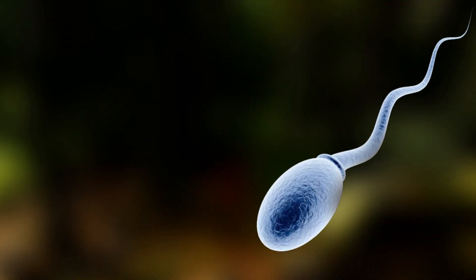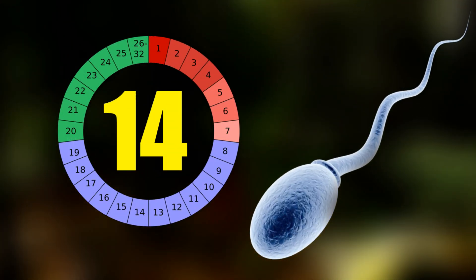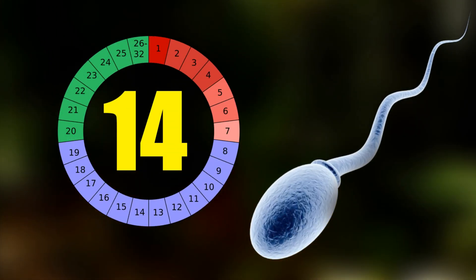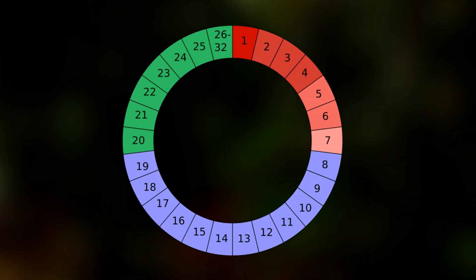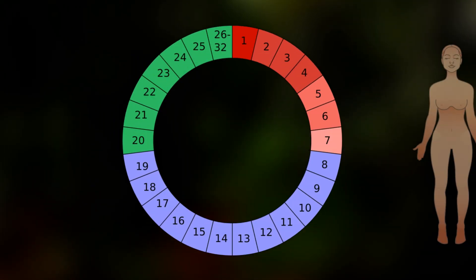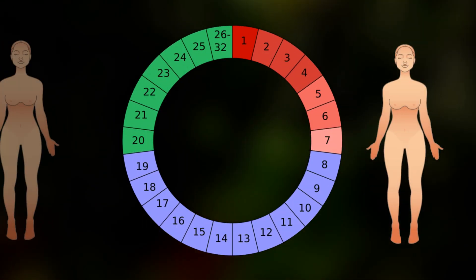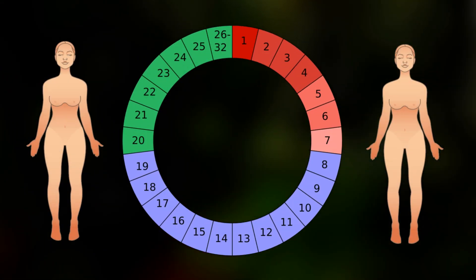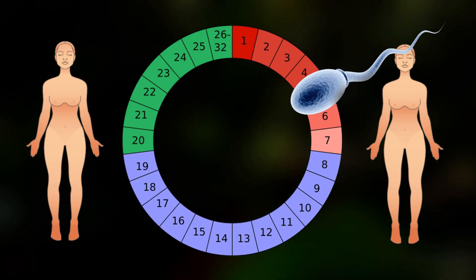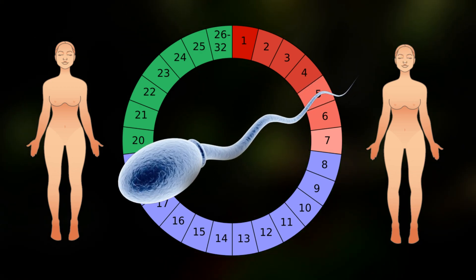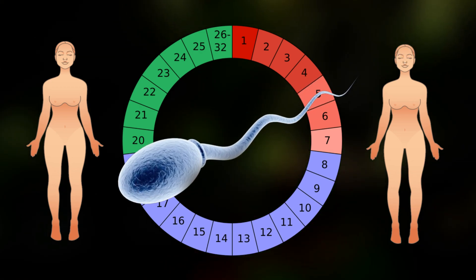Ovulation typically occurs about 14 days before the start of the next menstrual period. Each person's cycle length may be different, and the time between ovulation and the start of the next menstrual period may vary.